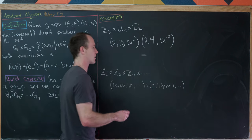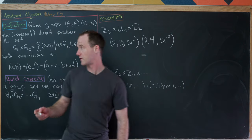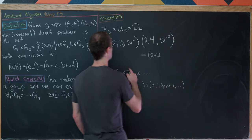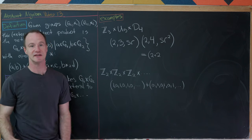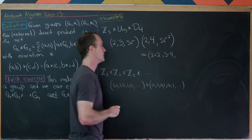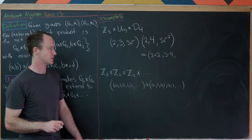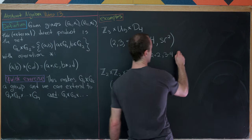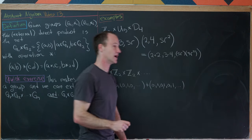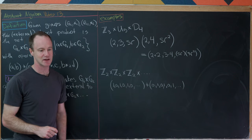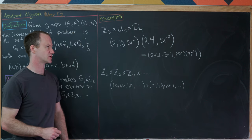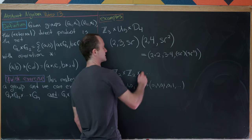To combine elements using the external direct product operation, the first entry uses addition (the operation for Z3), the second entry uses multiplication (the operation for U5), and the third entry uses composition since dihedral groups are functions acting on polygons. So we'd compute 2+2 in Z3, 3×4 in U5, and the composition of sr with sr² in D4.